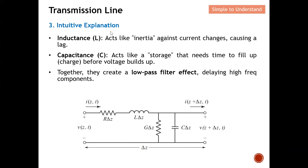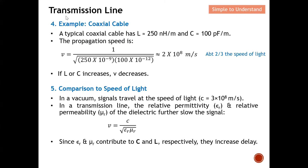In a simple explanation, inductor L resists current change and therefore causes a lag, while the capacitor acts as a storage — it needs time to fill up charges before the voltage can build up. Together, the L and C create a low-pass filter effect, which delays the high-frequency component. A typical example is a coaxial cable with L = 250 nanohenries and C = 100 picofarads per meter. We can calculate the propagation speed using the equation 1/√(LC), and the velocity inside the coaxial cable works out to approximately 2 × 10⁸ meters per second.